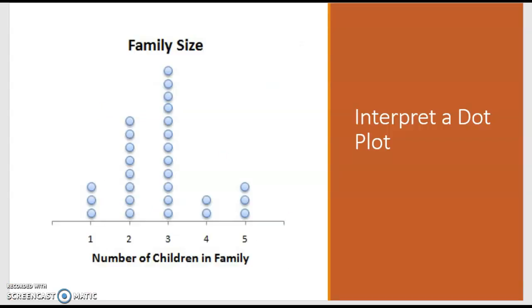Now if you're interpreting a dot plot, that simply means you're looking at a dot plot and you're telling me something you notice. I look at this—this dot plot is on family size and the number of children in a family. We can see the most common number of children in a single family is three. It's got the tallest bar, it's got the most dots, followed closely by two. So we can say two or three children is the most common.